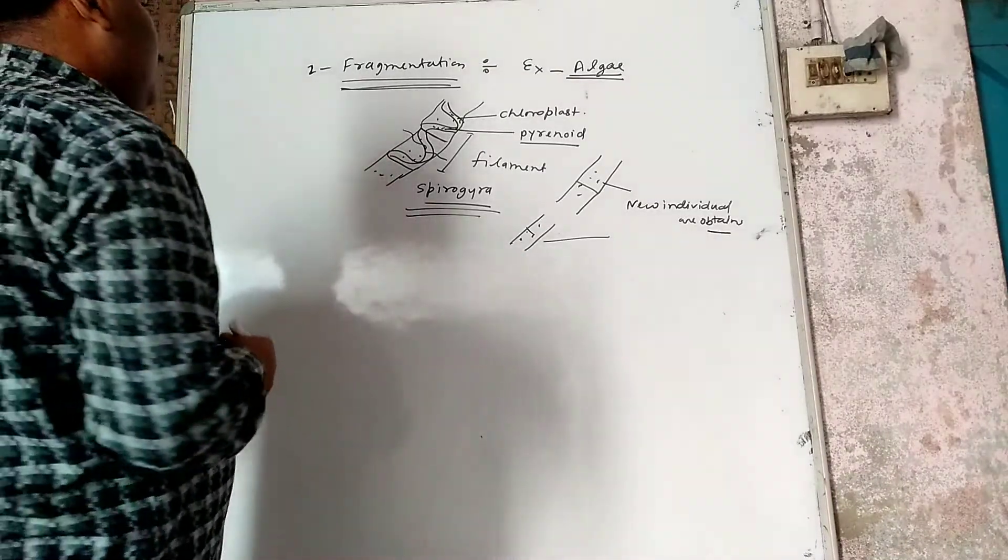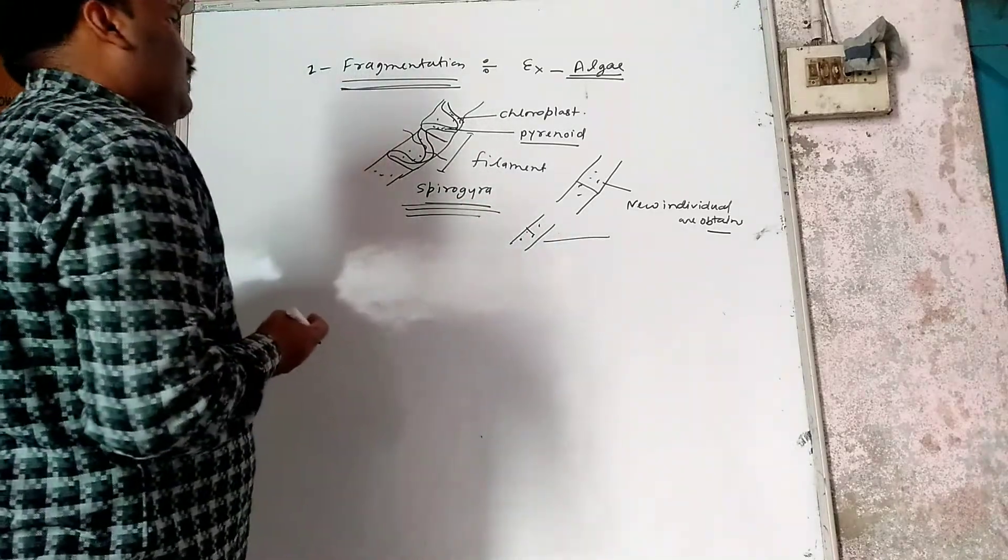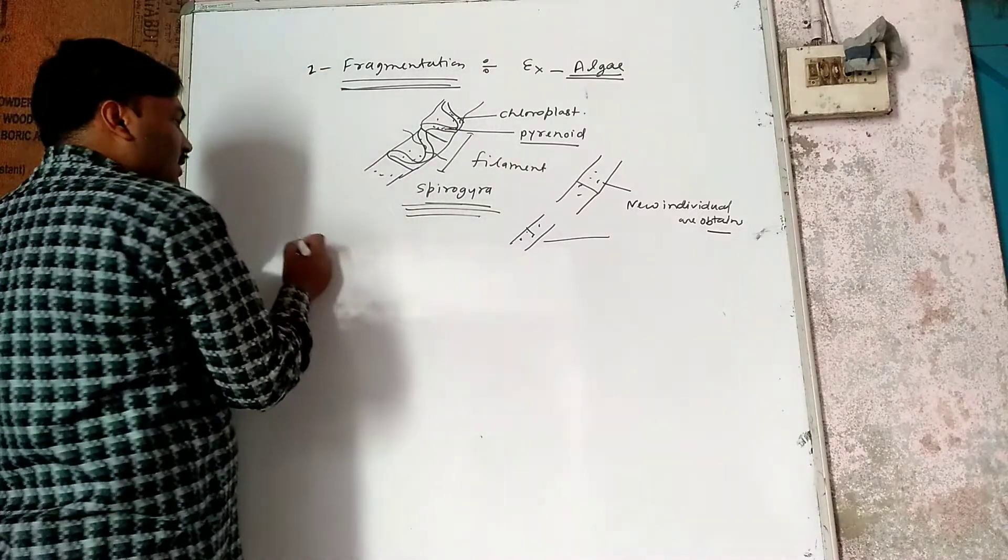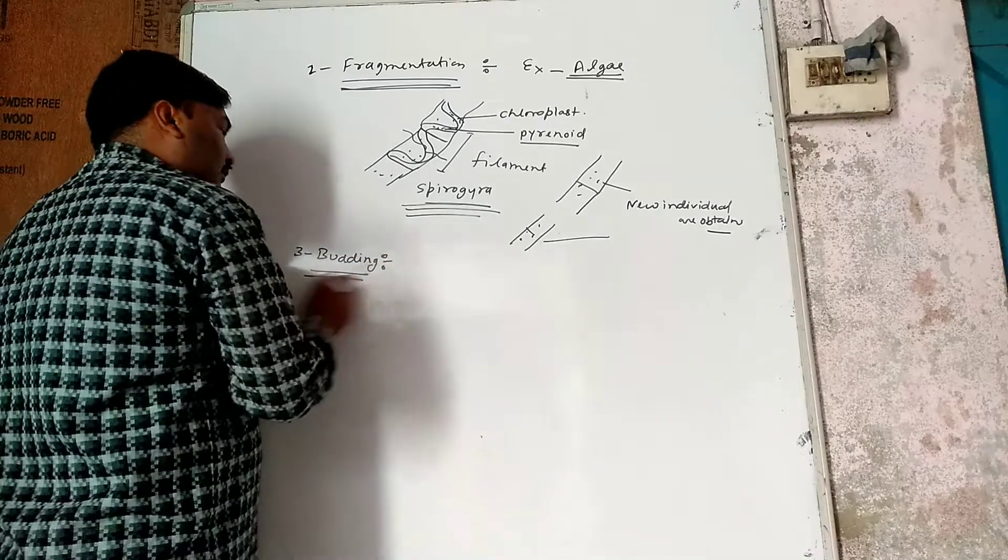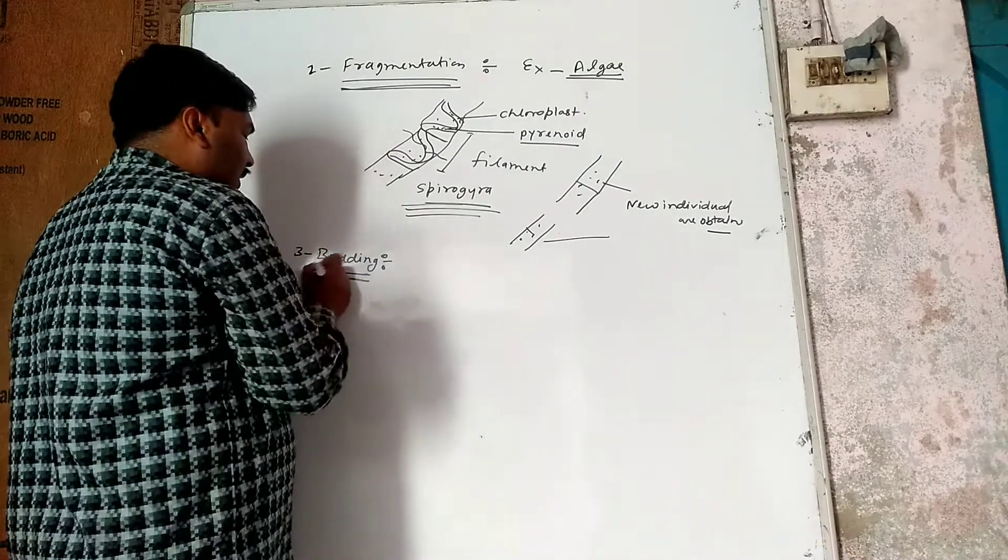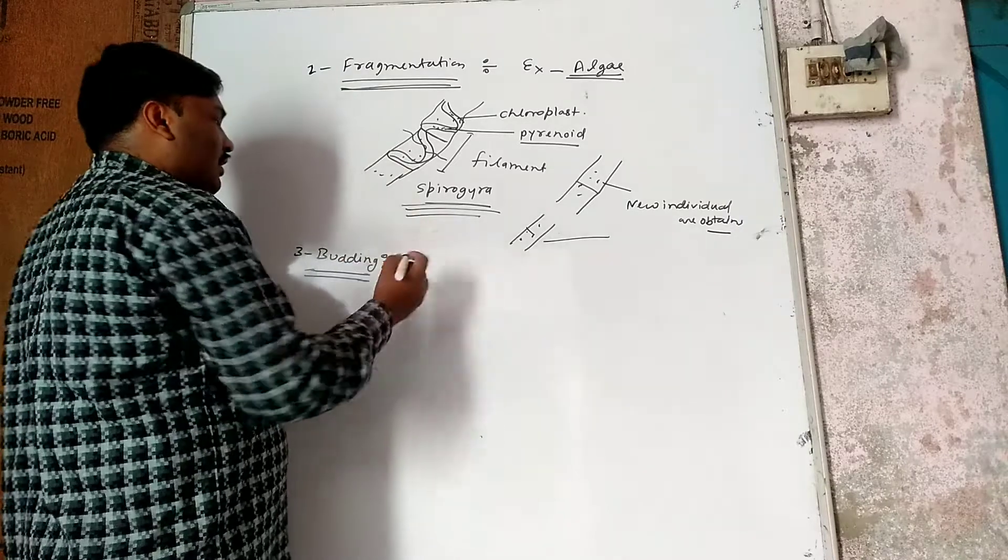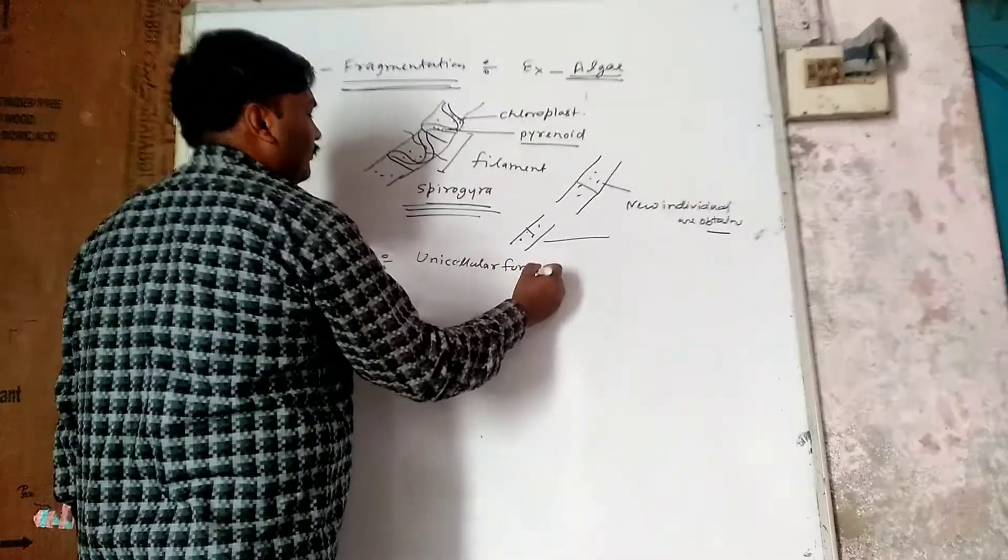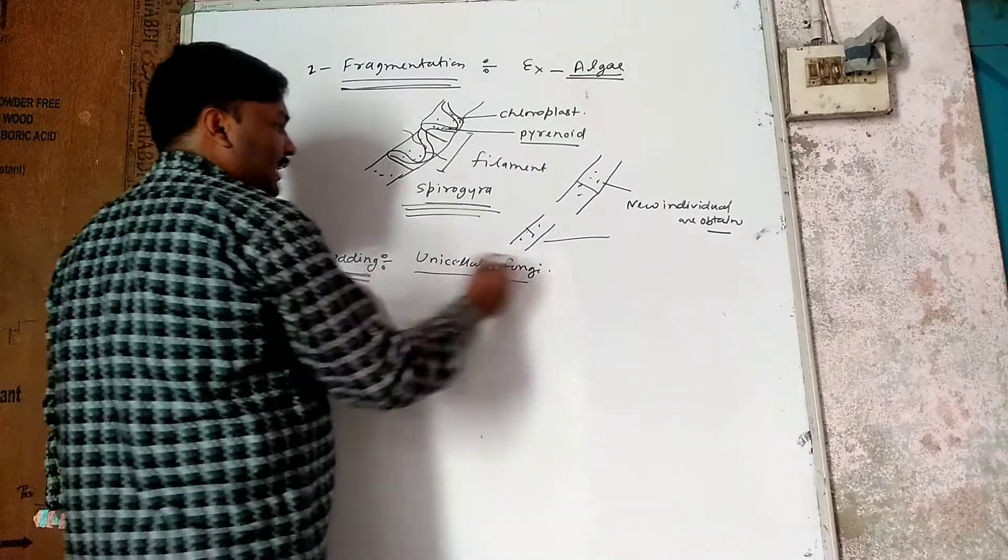So what happens, we get the common methods of asexual reproduction which are present in algae. The next is budding. Budding is the common method of asexual reproduction which are found in unicellular fungi. We can say that the unicellular fungi is like yeast, it is a single cell.